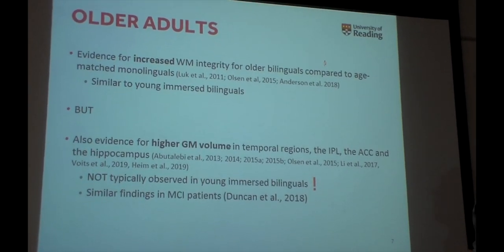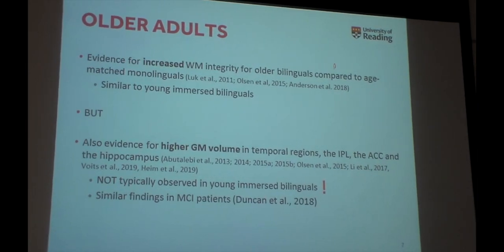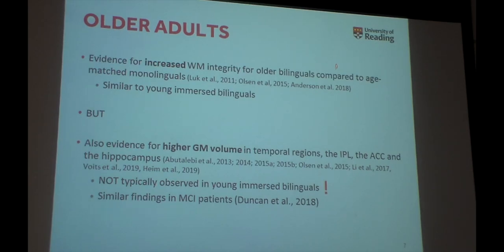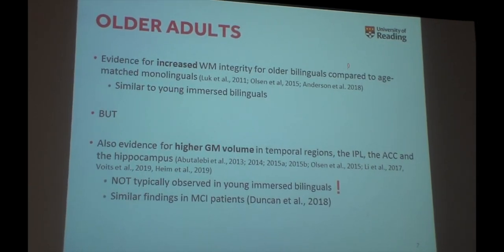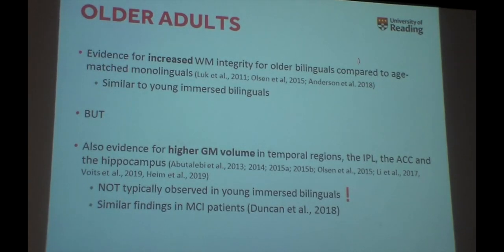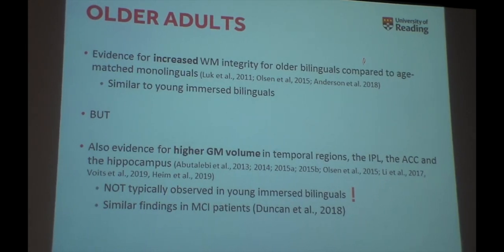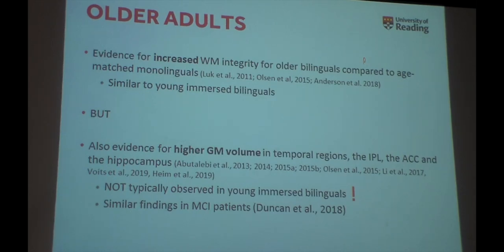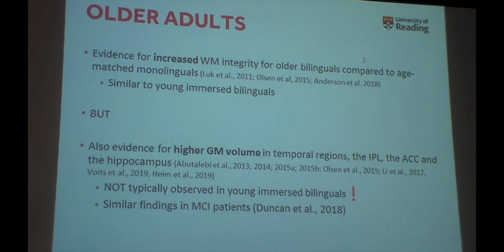Going back to older adults: we have evidence for increased white matter integrity for older bilinguals compared to age-matched monolinguals — this is what we find in young immersed bilinguals too. However, at the same time we find evidence for higher gray matter in older bilinguals in temporal regions, frontal regions, the cingulate cortex, and the hippocampus — an effect you don't see in young immersed bilinguals. Young people don't show gray matter effects if they're immersed. Why do older people show gray matter effects? That's another 'what on earth' finding.